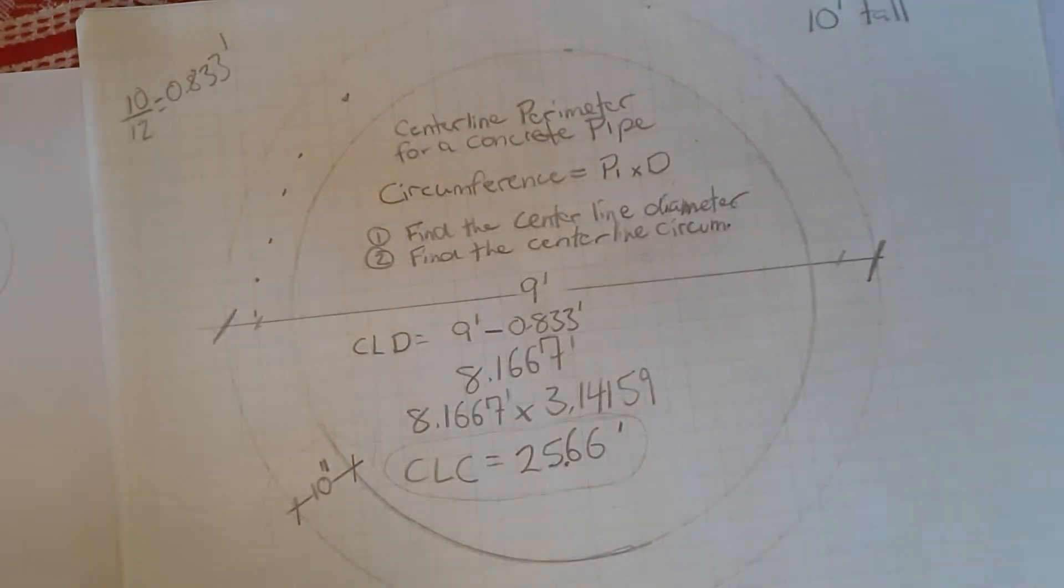However, this question keeps coming up on certificate of qualifications in your carpentry apprenticeship and your different level three in your concrete section there. So we want to make sure that we understand centerline perimeter as it deals with circles, and who knows, maybe one day you'll get some round patios that you have to pour and this will become useful to you.